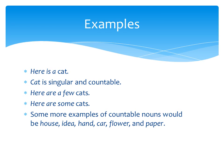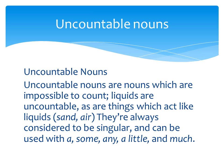Here are some examples. Here is a cat. Cat is singular and countable. Here are a few cats. Here are some cats. Some more examples of countable nouns would be: house, idea, hand, car, flower, and paper.